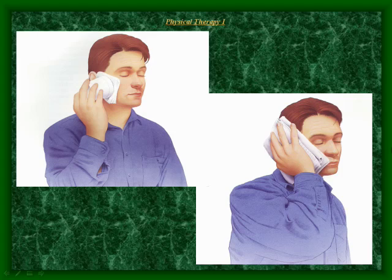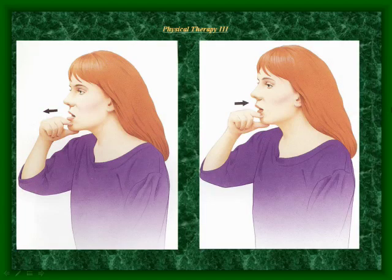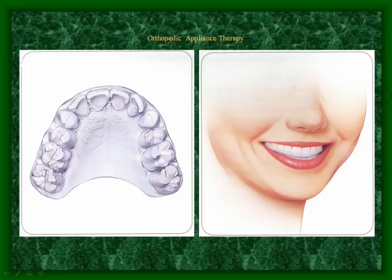The doctor will prescribe simple, minor physiotherapy that will help to a certain degree. If further pain persists, a doctor will recommend a Crouse splint or orthopedic appliance therapy. This provides a smooth surface where the upper and lower teeth do not interlock with each other, enabling the jaw to obtain some space and therefore alleviate any compression.